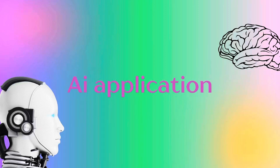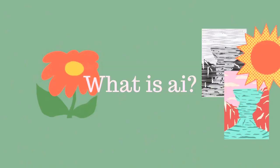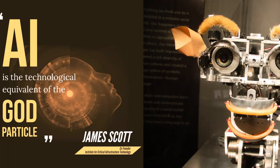Today we'll be discussing AI applications and whether it's a good or bad thing. First, we have to understand what AI means. Basically, it's the ability of a digital computer or controlled robot to perform tasks. To make that happen, you have to ingest a large amount of training data, and then it will analyze the data for correlations and patterns. After that, it uses these patterns to make predictions about future states.